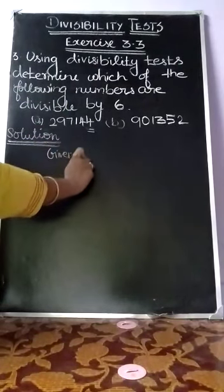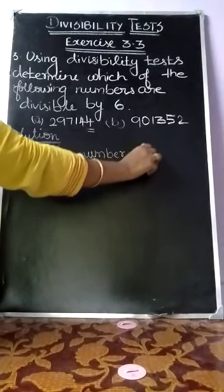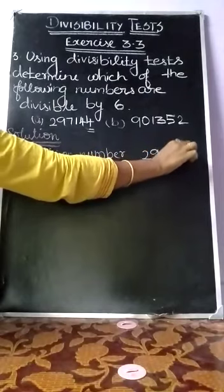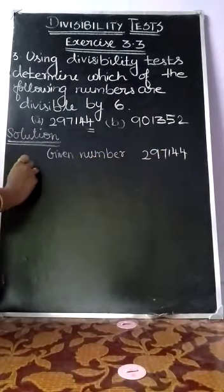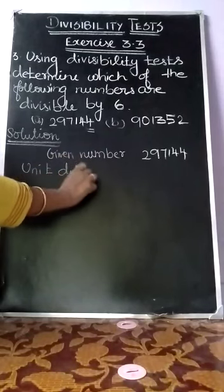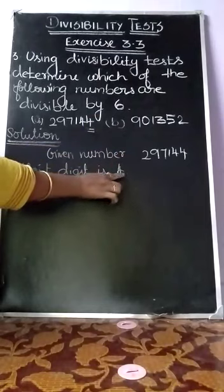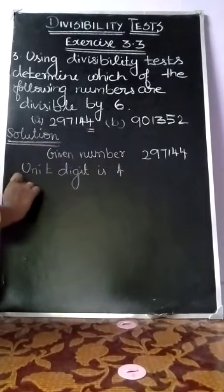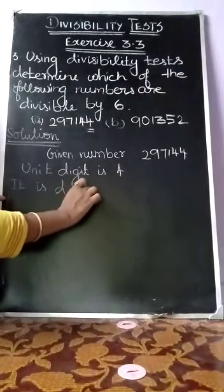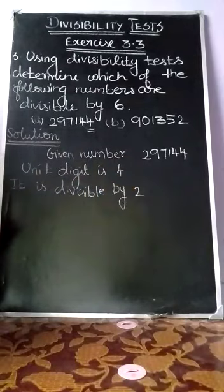Given number: 297144. The unit digit is 4, so it is divisible by 2 — first condition is satisfied.